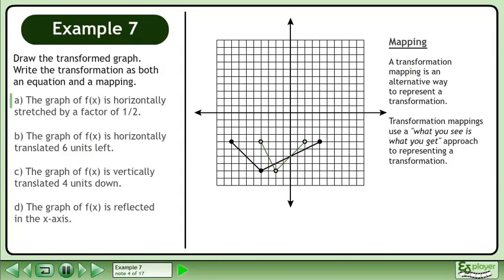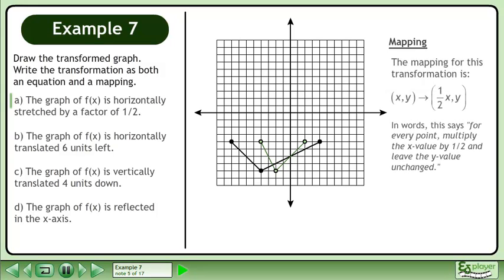A transformation mapping is an alternative way to represent a transformation. Transformation mappings use a what-you-see-is-what-you-get approach to representing a transformation. The mapping for this transformation is shown. In words, this says, for every point, multiply the x value by ½ and leave the y value unchanged.